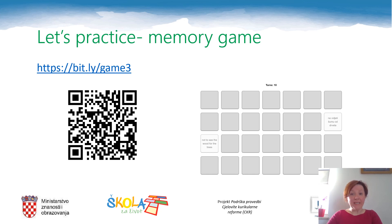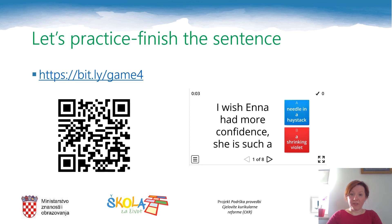Therefore, 'a needle in a haystack' is translated literally: igla u plastu sijena. However, 'as fresh as a daisy' means nothing in Croatian if you translate the phrase literally. In Croatian, we say svježa kao rosa. So let's play this memory game — follow the link or scan the code. Now that we've learned the Croatian versions of some English nature idioms, it's time to use them in context, in a sentence. Follow the link or scan the code and see how well you can use English nature idioms.